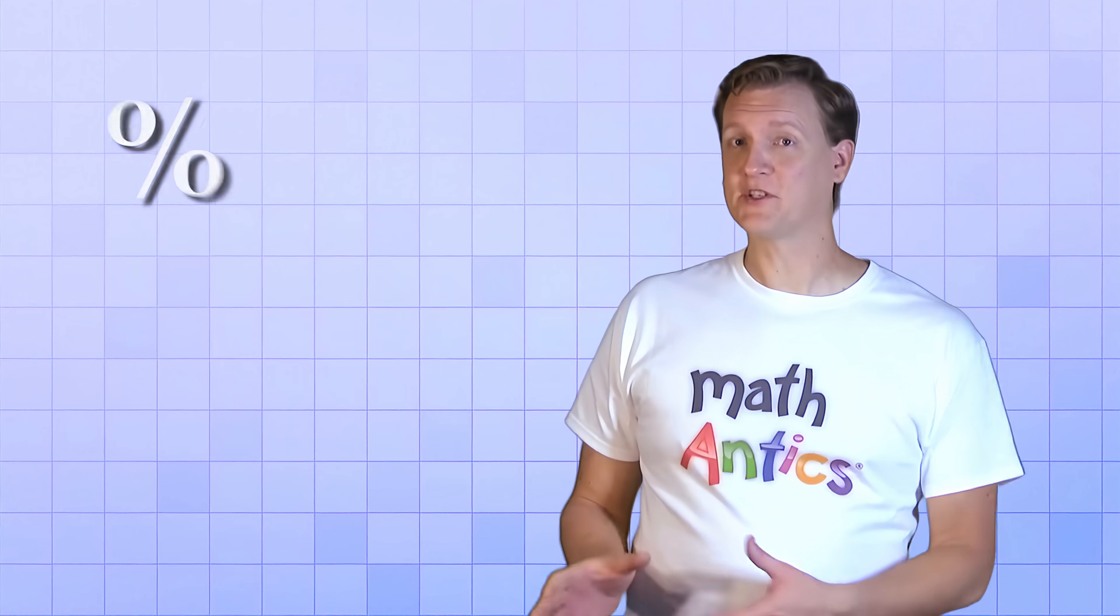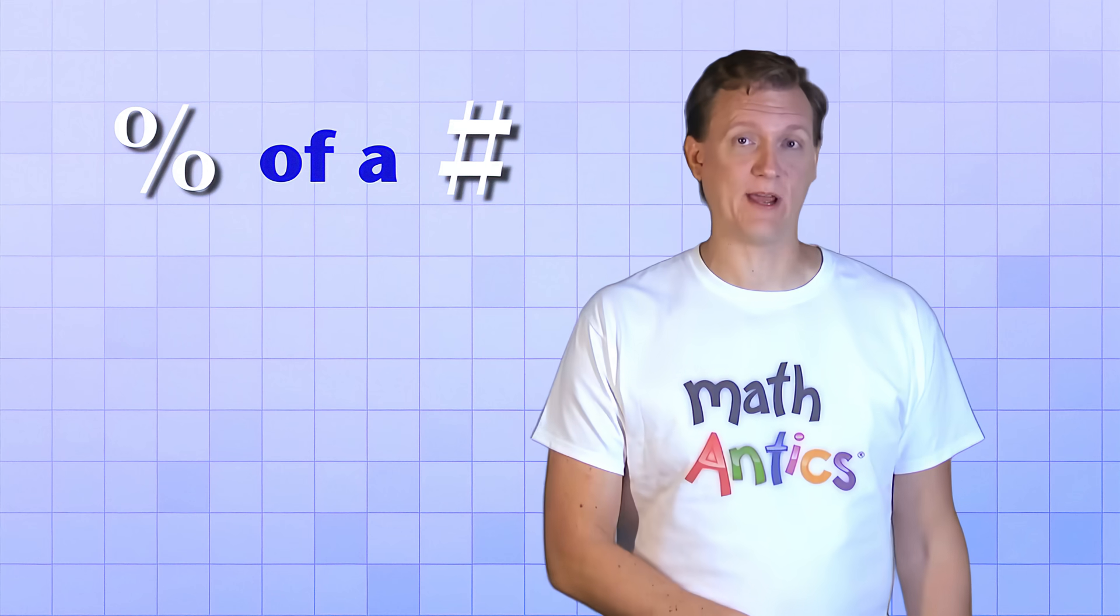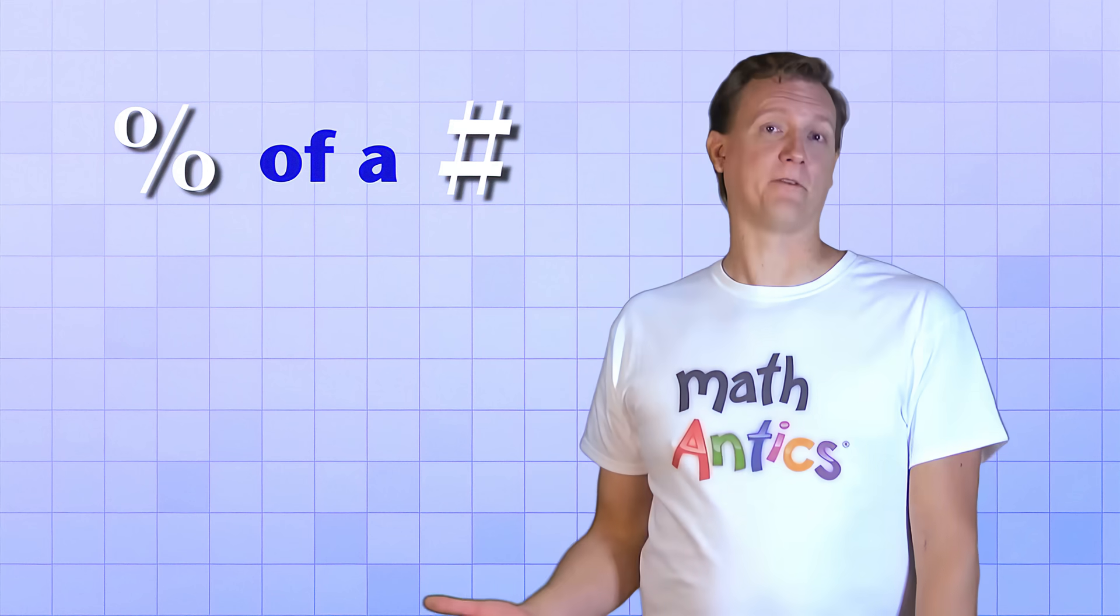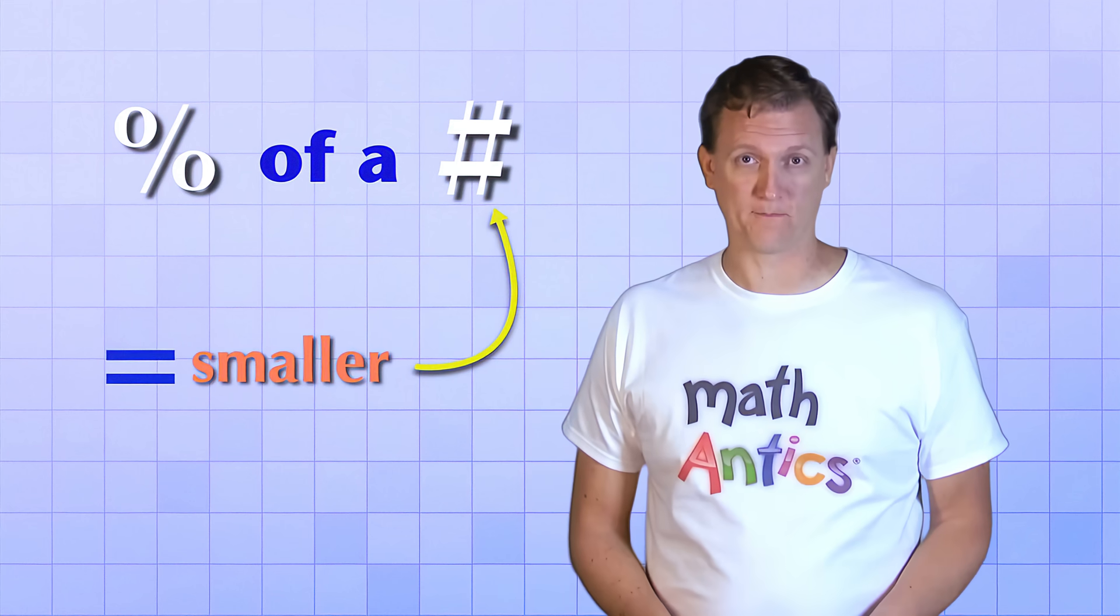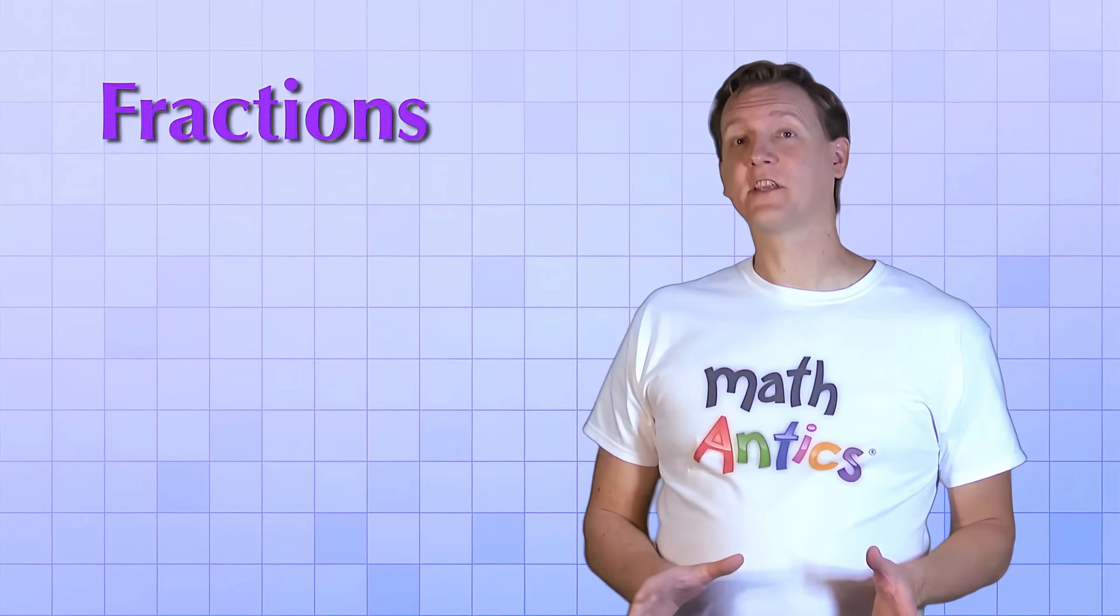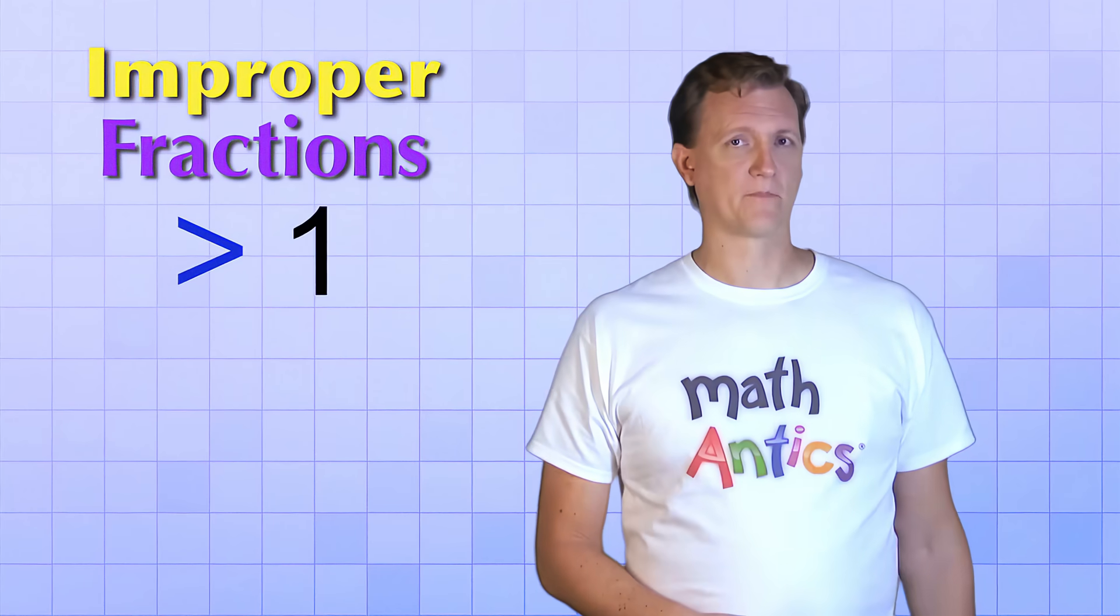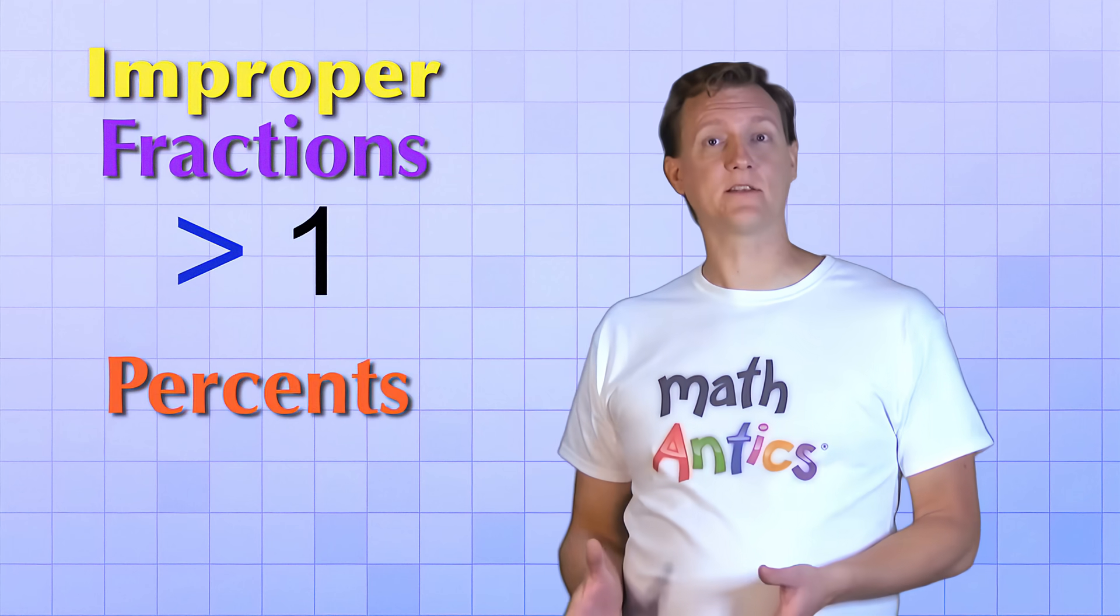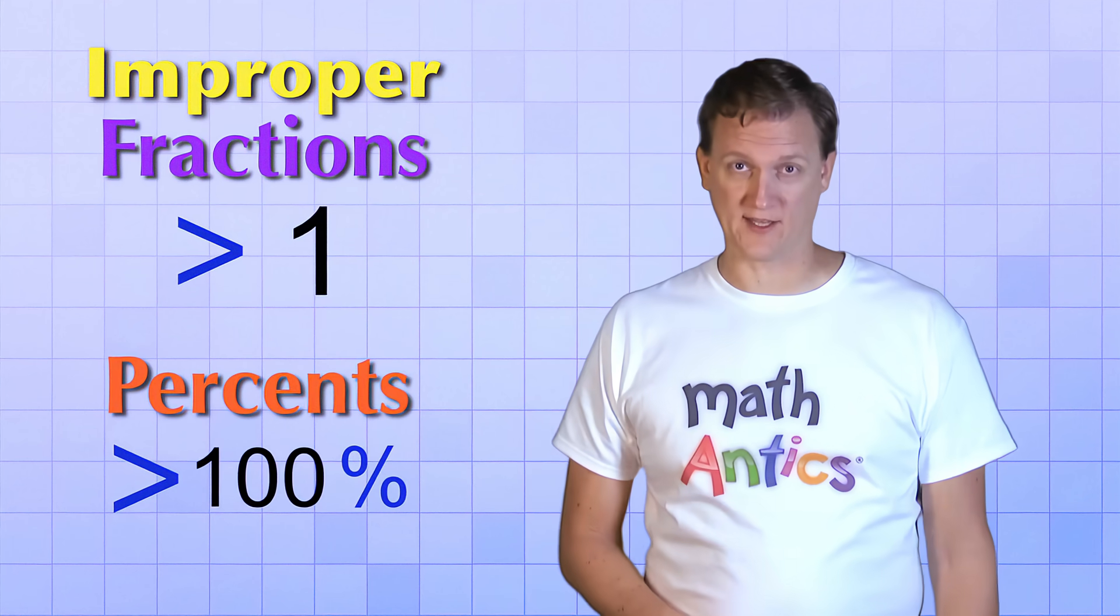Okay then, in the last two problems, we found a percent of a number, which, like we learned at the beginning of the video, just means finding a fraction of an amount. And like you'd expect when finding a fraction of something, the answer was smaller than the amount we started with. But remember, fractions can be improper too, which means that their value is greater than 1. And in the same way, percents can be greater than 100%. So you might come across situations like this.